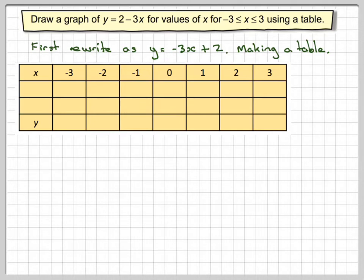Now, there are two bits of this equation. There's a minus 3x and there is a 2. So here I'm going to write minus 3x. I'm going to do minus 3 times minus 3, which makes plus 9. Minus 2 times minus 3 makes plus 6. Minus 1 times minus 3 makes 3. 0 times minus 3 makes 0. 1 times minus 3 makes minus 3. 2 times minus 3 makes minus 6. And 3 times minus 3 makes minus 9.